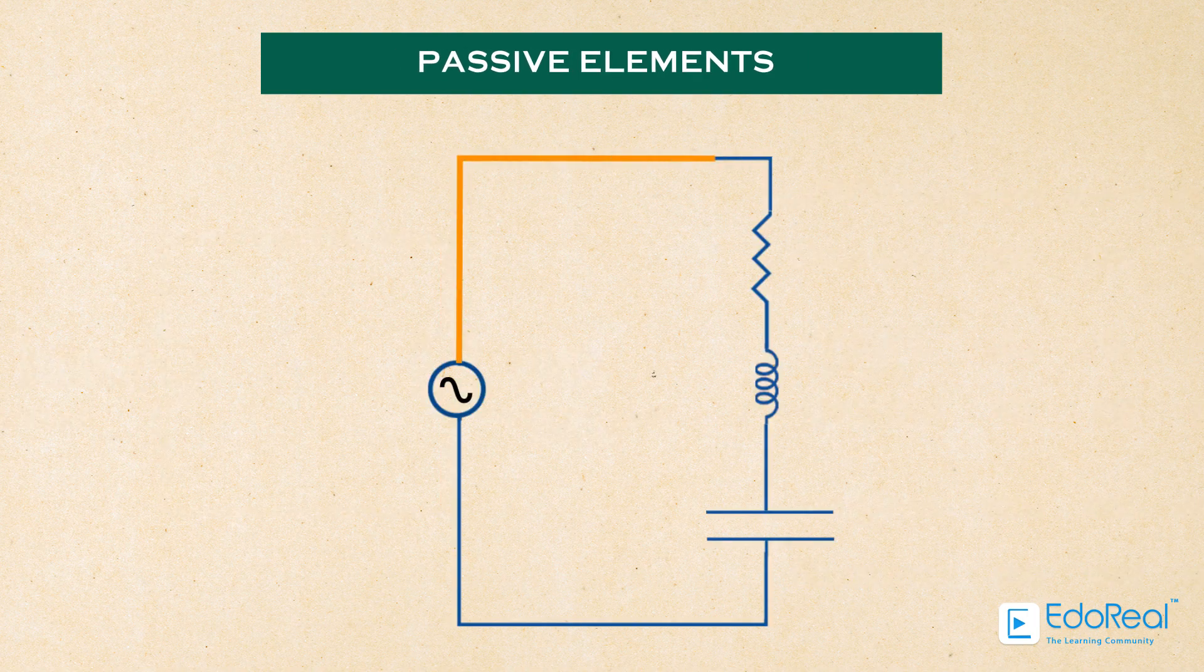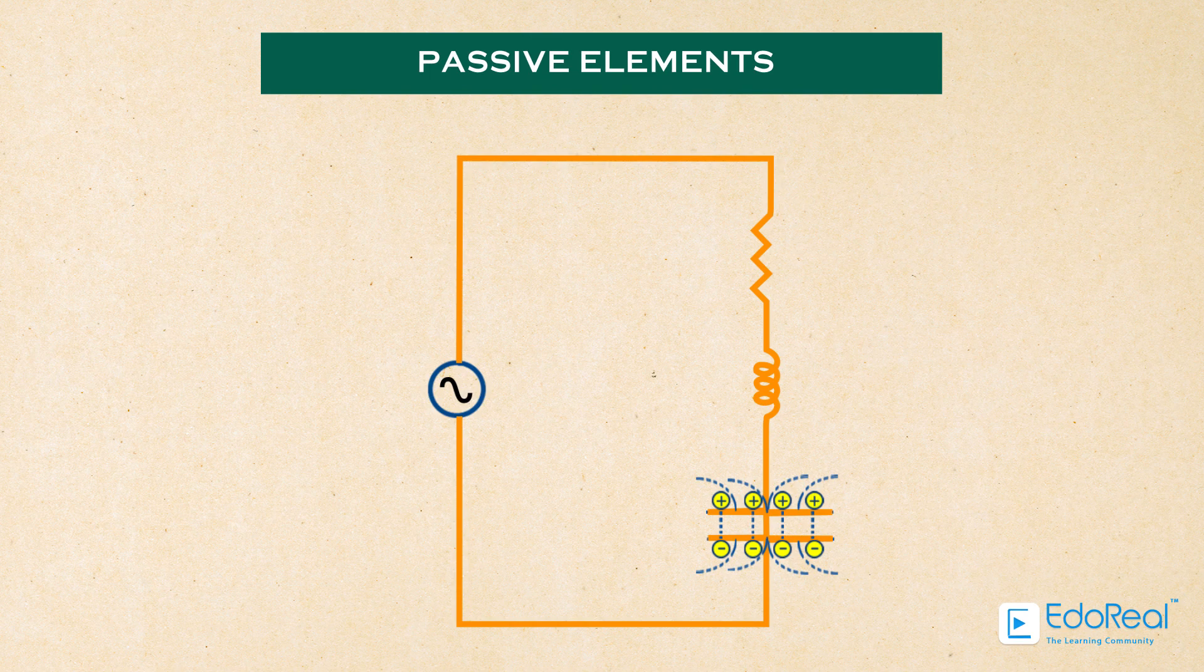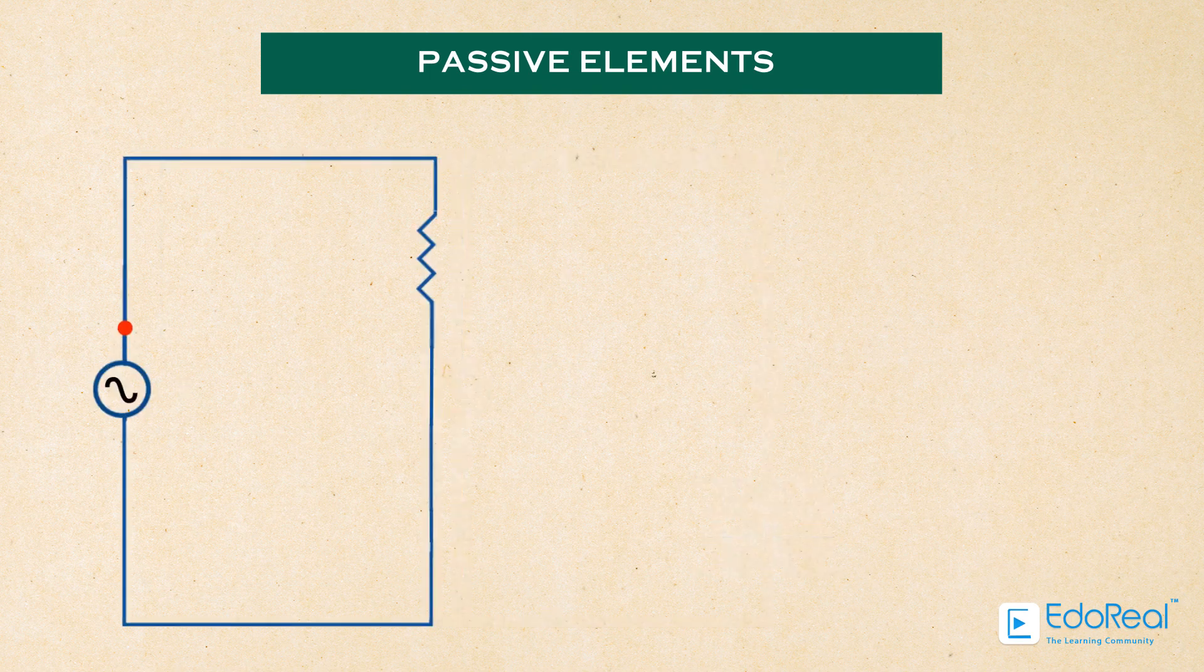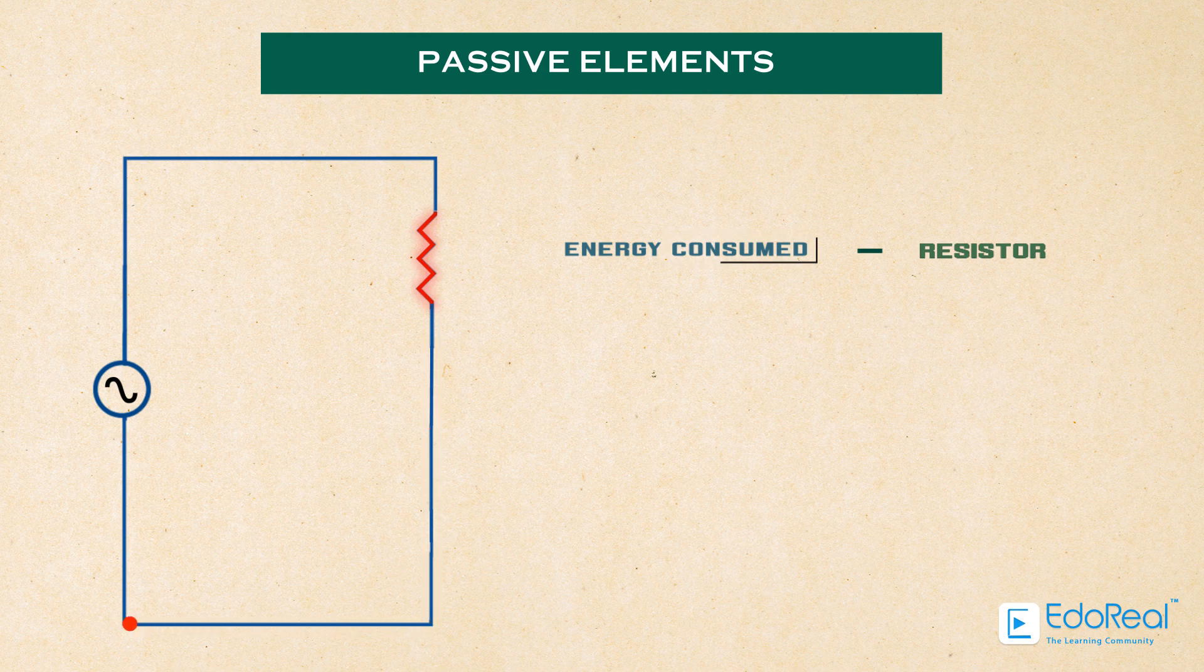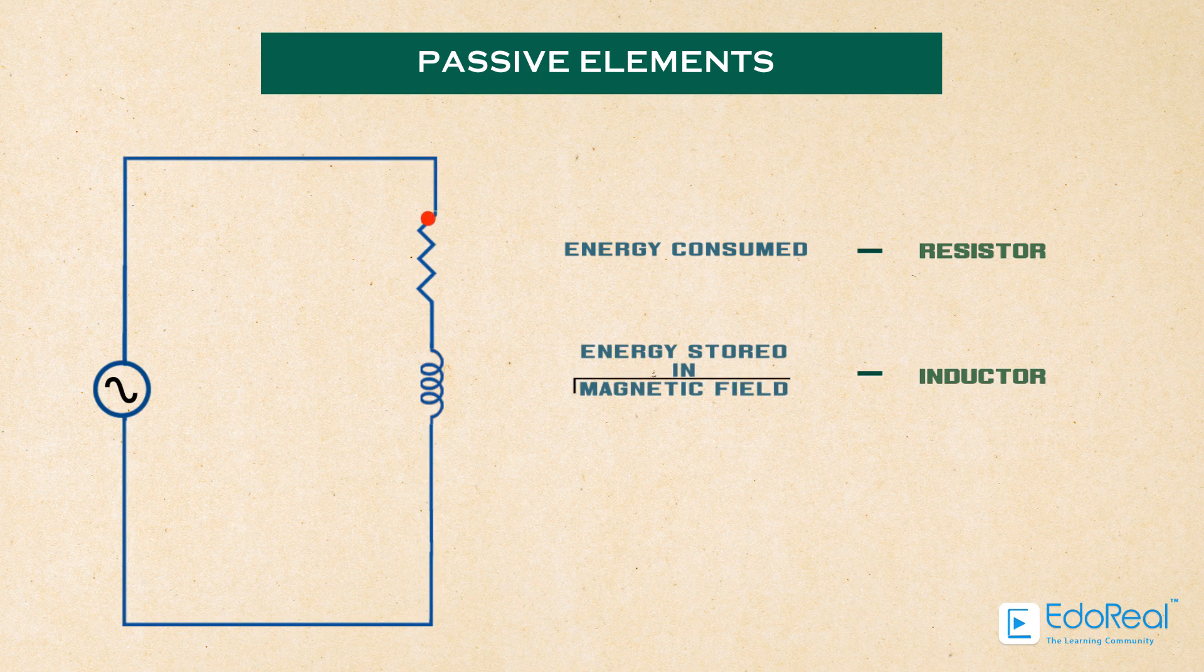When electrical energy is supplied to a circuit element, it will respond in one or more of the following ways. If the energy is consumed, then the circuit element is a pure resistor. If the energy is stored in a magnetic field, the element is a pure inductor.